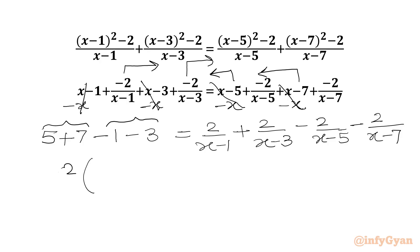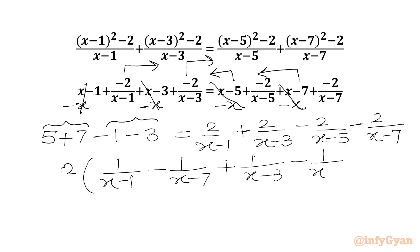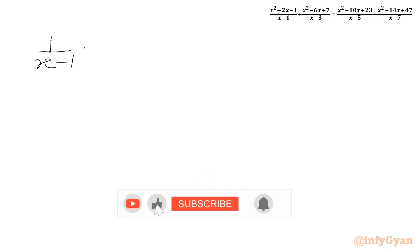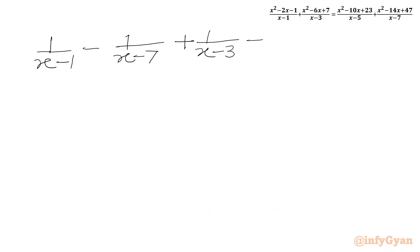We factor out 2 common from the RHS to get: 2 times [1 over (x minus 1) plus 1 over (x minus 7) plus 1 over (x minus 3) minus 1 over (x minus 5)] equals 8. Dividing both sides by 2 gives: 1 over (x minus 1) minus 1 over (x minus 7) plus 1 over (x minus 3) minus 1 over (x minus 5) equals 4.